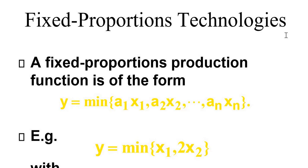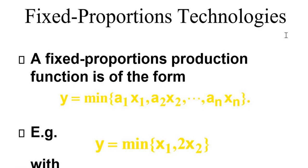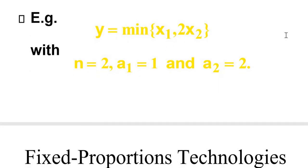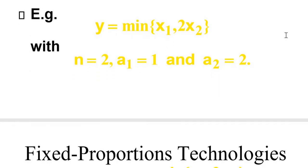Fixed proportions technologies: a fixed proportions production function is of the form y = min(a1·x1, a2·x2, ..., an·xn). For example, y = min(x1, 2x2), where a1 equals 1 and a2 equals 2.